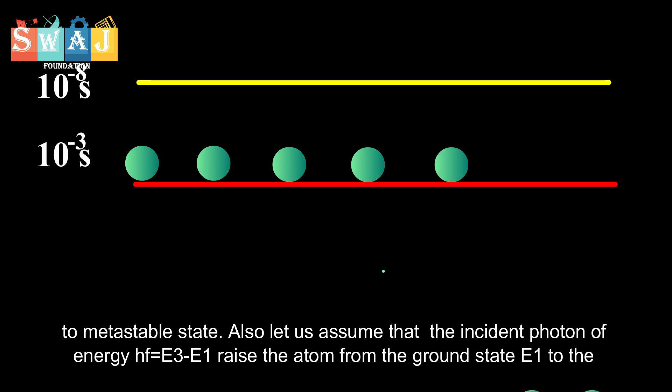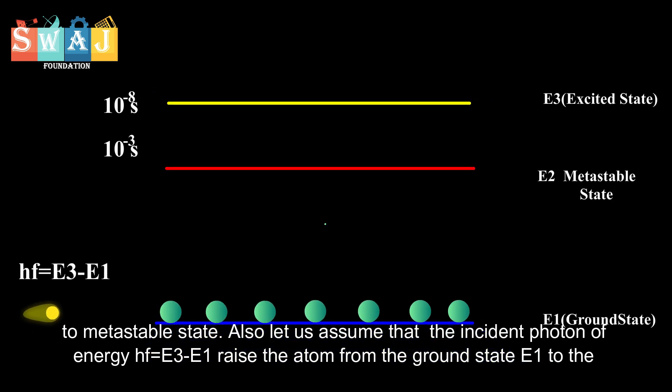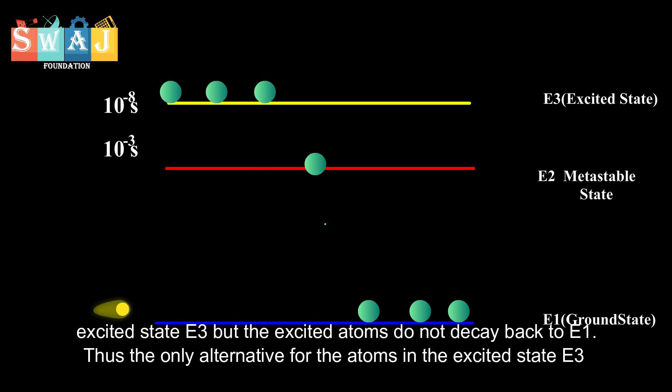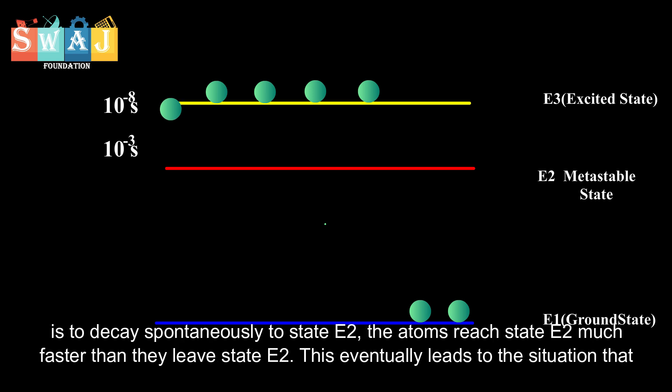Also, let us assume that the incident photon of energy hf equals E3 minus E1 raises the atom from the ground state E1 to the excited state E3, but the excited atoms do not decay back to E1. Thus, the only alternative for the atoms in the excited state E3 is to decay spontaneously to state E2.